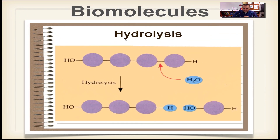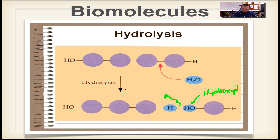In this graphic, hydrolysis uses water to break a four-part polymer. We replace the water that was removed during dehydration synthesis. The functional groups re-attach: the hydroxyl group goes back on one monomer and the hydrogen goes back on the other. Once we break that bond, we have released energy.